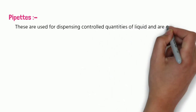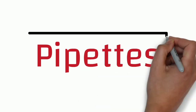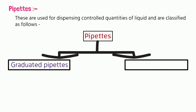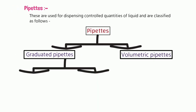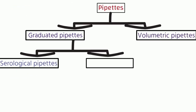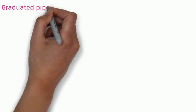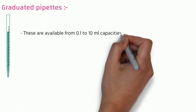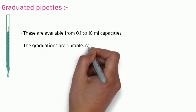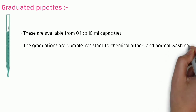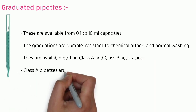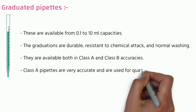Pipettes are used for dispensing controlled quantities of liquid and are classified as follows. You can see some types of pipettes in this picture: graduated pipettes and volumetric pipettes. In graduated pipettes there are two types: serological pipettes and Mohr's pipette. Graduated pipettes are available from 0.1 to 10 ml capacity. The graduations are durable and resistant to chemical attack and normal washing. They are available in both Class A and Class B accuracies. Class A pipettes are very accurate and are used for quantitative determination.